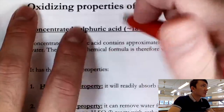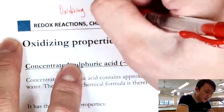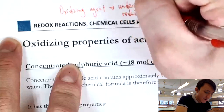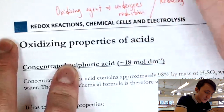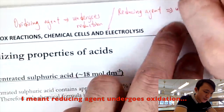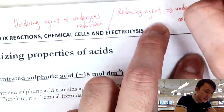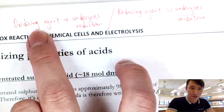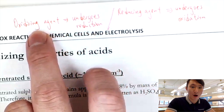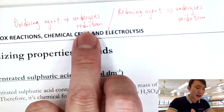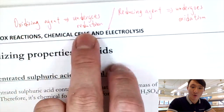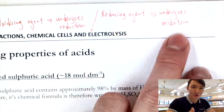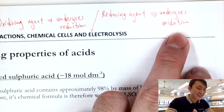Before we continue, let's review oxidizing agents and reducing agents. Remember: oxidizing agents undergo reduction, and reducing agents undergo oxidation — it's counterintuitive. Think of 'agent' as a helper: an oxidizing agent helps others undergo oxidation by undergoing reduction itself. Similarly, a reducing agent helps others undergo reduction by undergoing oxidation itself.